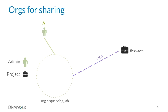We can give Org Sequencing Lab view permissions to a project called Resources. By sharing this project with the org, we are giving every member of Org Sequencing Lab view permissions to this project. Right now the org only has one member, user A, which means only user A has permissions to the Resources project via the permissions granted to his org.